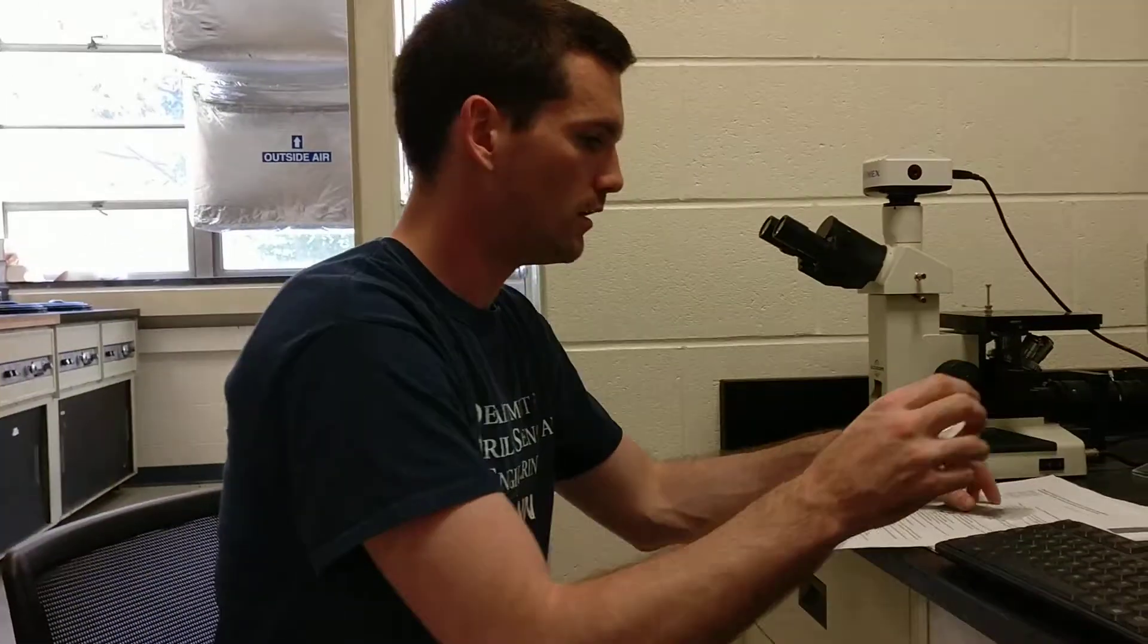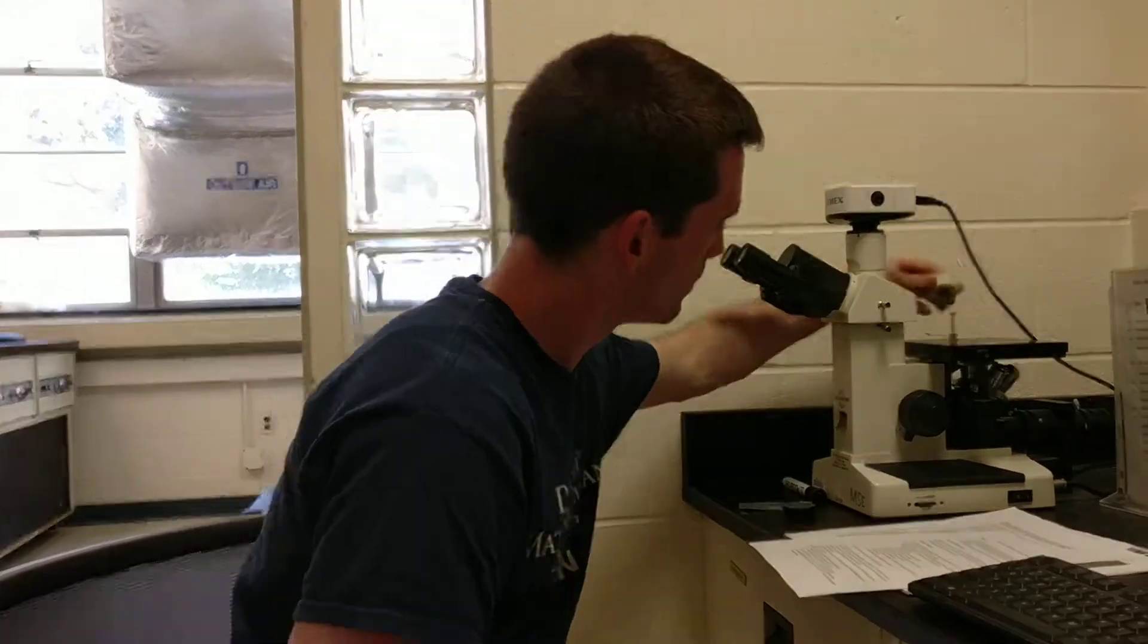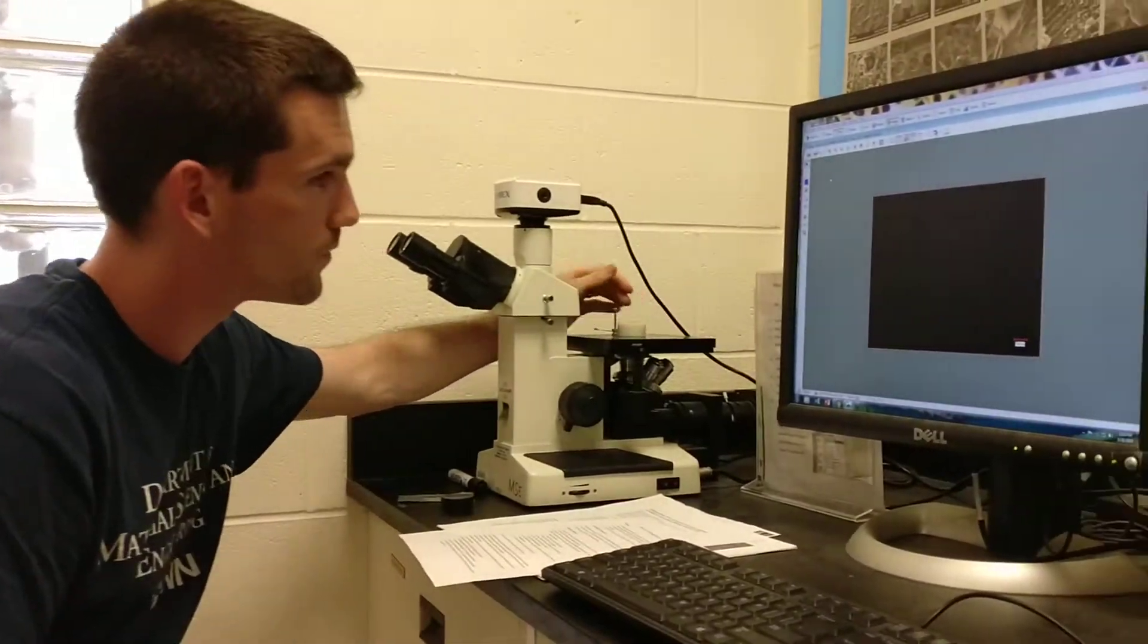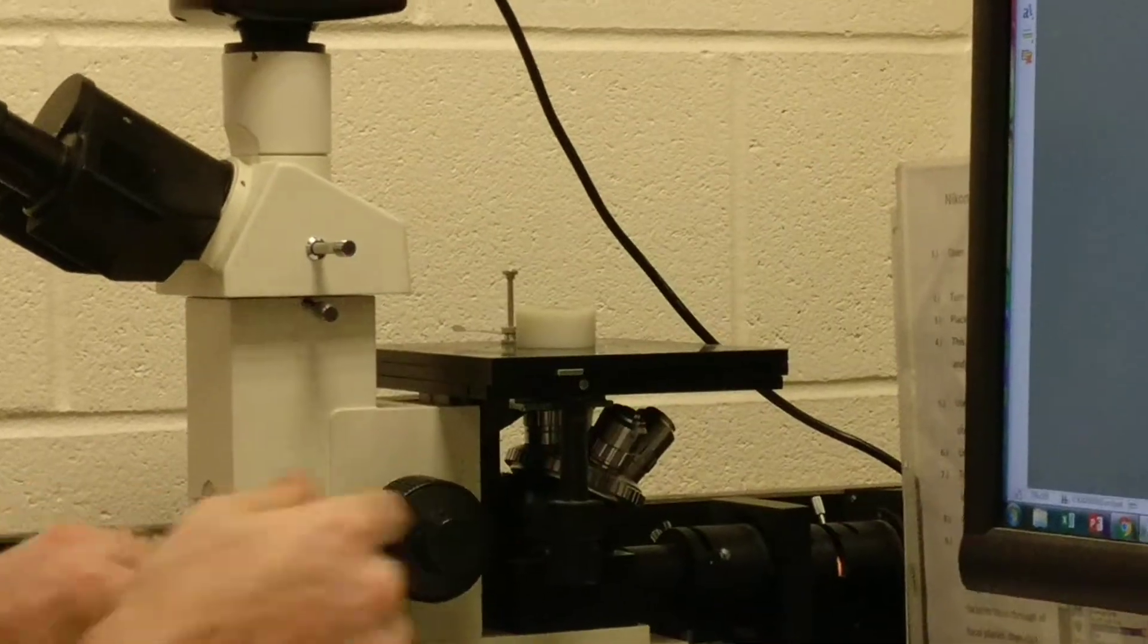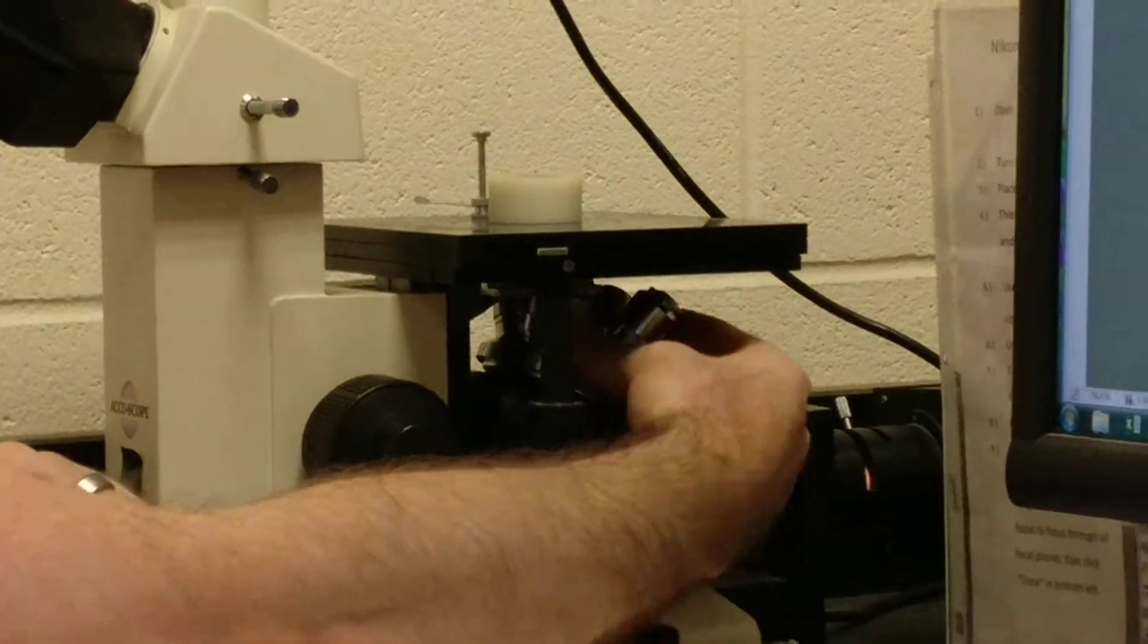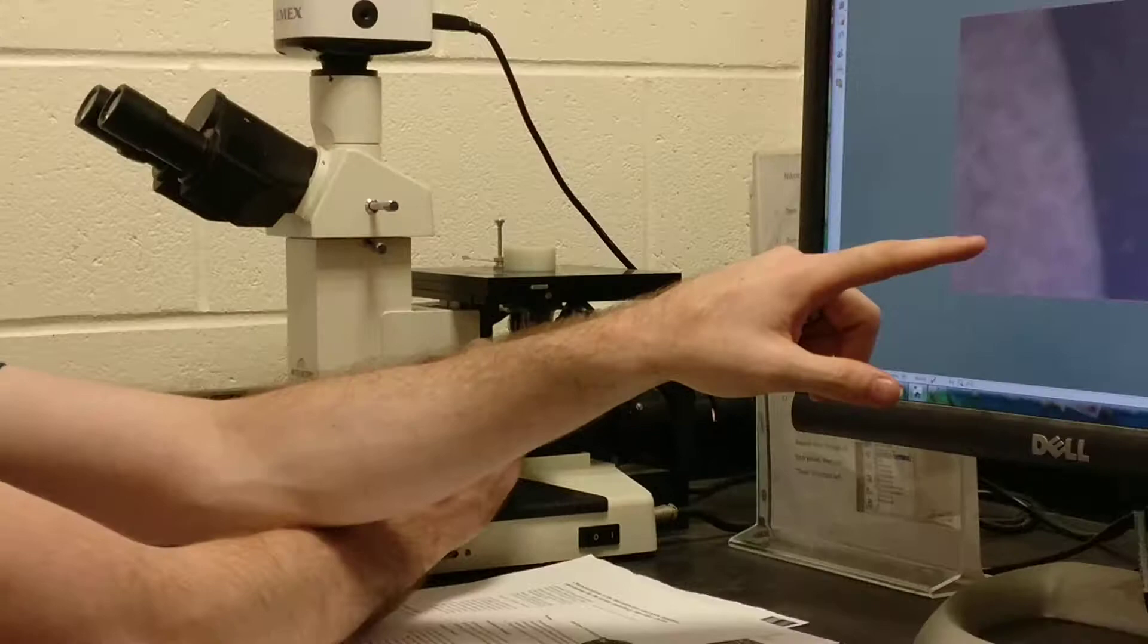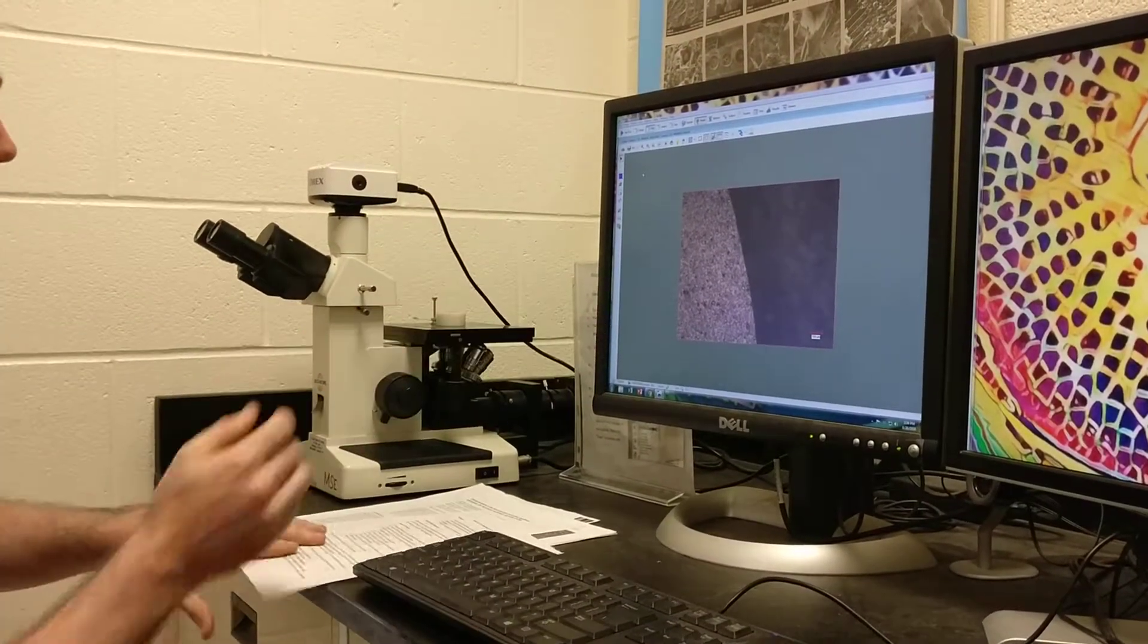The first thing we'll start doing is measuring these layers of the thermal barrier coating. Put the sample on the microscope, check that this pin is pulled out so we get light going to the microscope. Make sure that our objective lens is on 50x in order to find the edge of the sample.